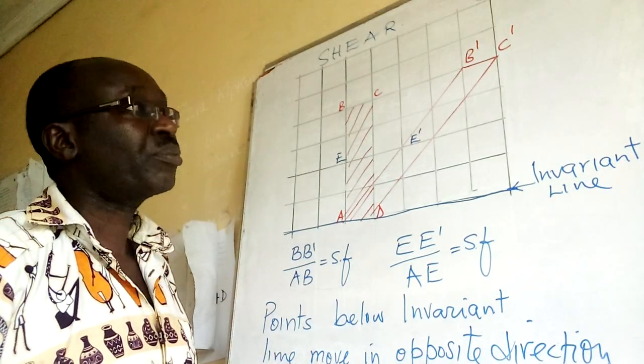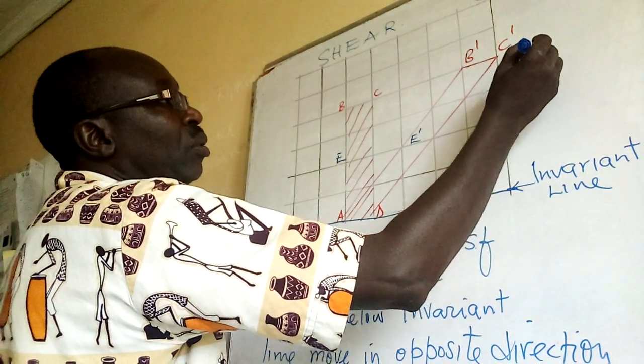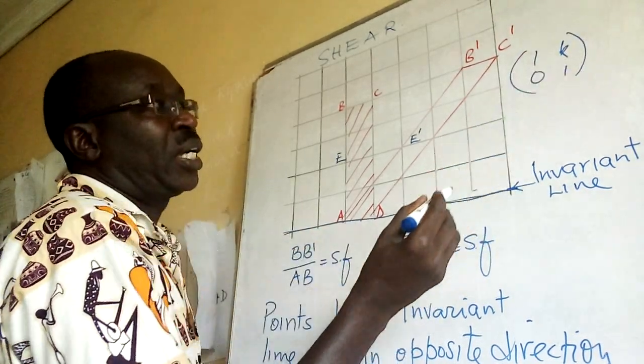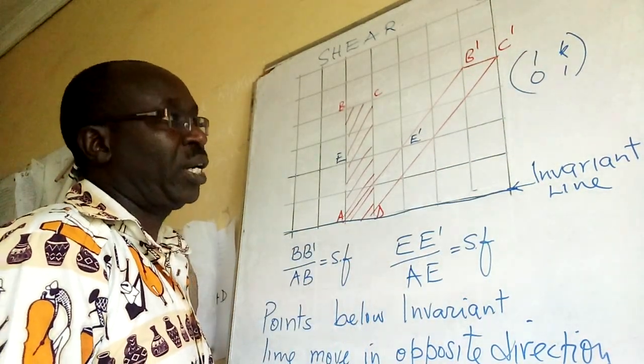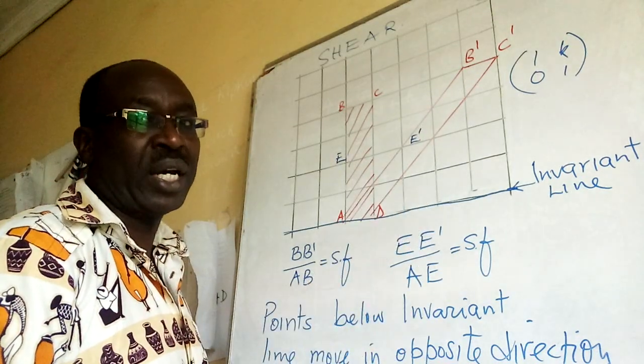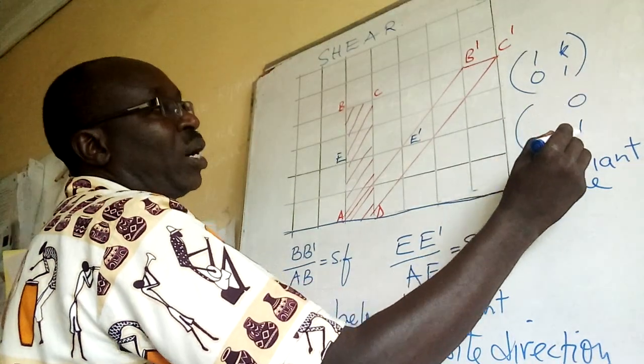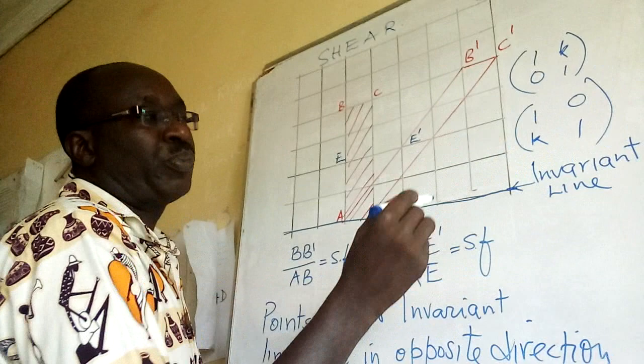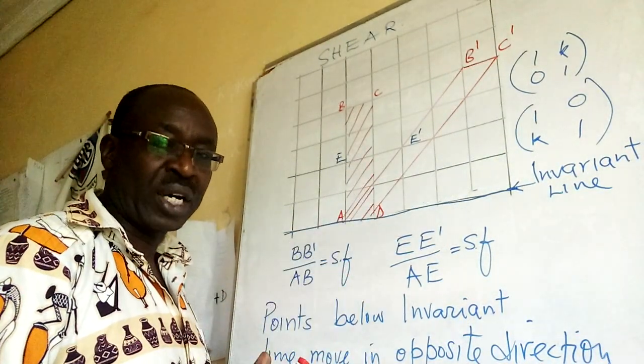Then the shear matrices will be in form of 1, 0, K, 1. That is scale factor K. And this is movement parallel to the x-axis. Then you have 1, K, 0, 1. This is K. This is parallel to the y-axis.